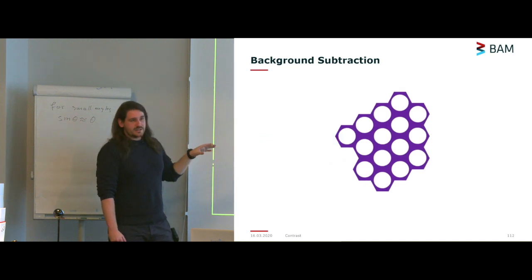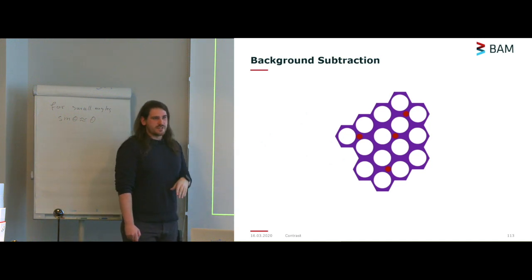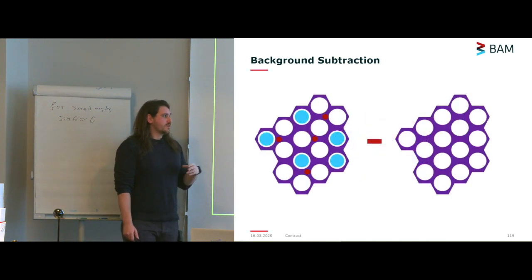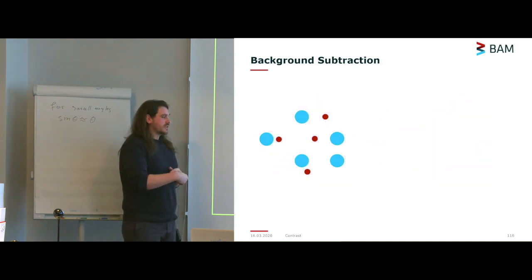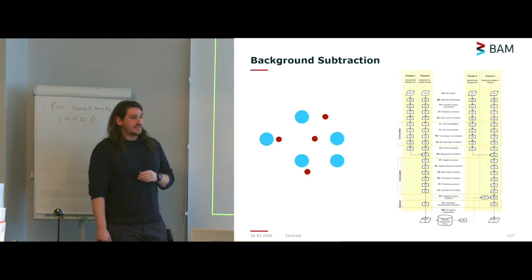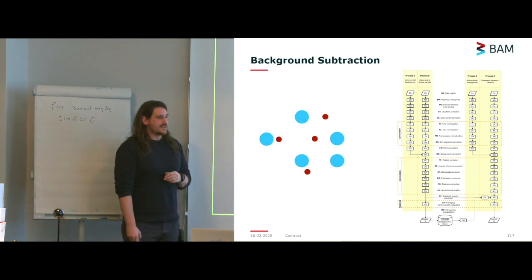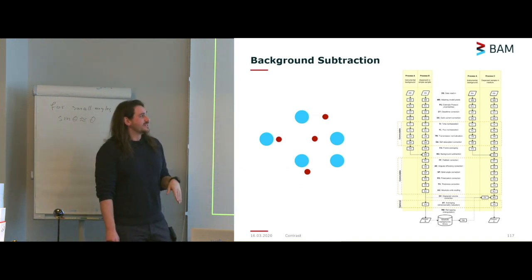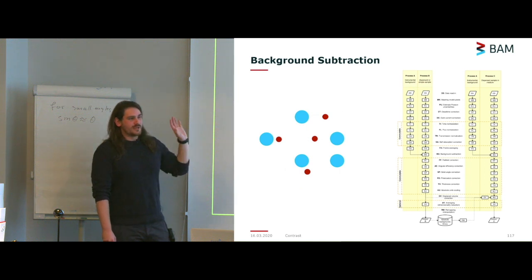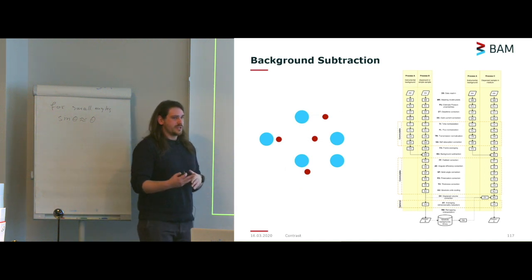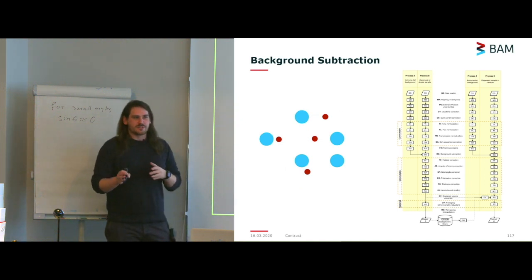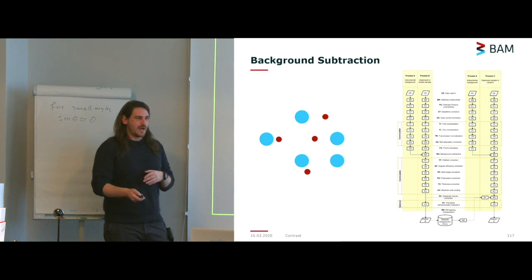This is after doing background subtractions on your data. Essentially, if you take a scattering pattern of your sample and then a scattering pattern of your solvent, you can subtract the solvent contribution and be left, in theory, with just your particles. The same applies to solid samples — if you have a blank membrane that is the same as your membrane with particles, you can subtract it and be left with just your particles. There are many things to think about with background subtraction, which will be covered in much more detail tomorrow.